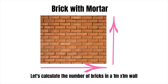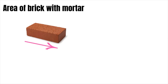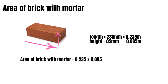Now consider a one meter by one meter wall and let's see how many bricks we are going to need. For a wall of one meter length and one meter width, the area will be one meter by one meter, which equals one square meter. The area of a brick with mortar is given by length multiplied by height: 0.235 meters by 0.085 meters, which equals 0.019975 square meters.